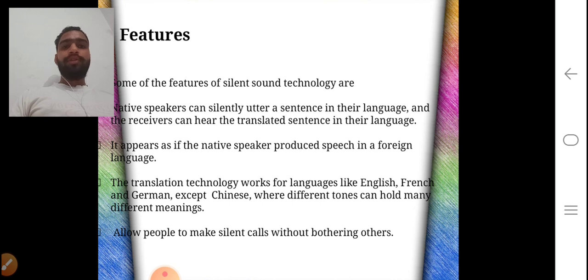Features: now we discuss the features of silent sound technology. A native speaker can silently utter a sentence in their language and the receiver can hear the translated sentence in their own language. It appears as if the native speaker produces speech in a foreign language. This translation technology works for languages like English, French and Germany, but it is not useful in Chinese because different tones in Chinese can hold different meanings. So it is not beneficial in Chinese language but it is beneficial in English, French and German to allow people to make silent calls without bothering others.